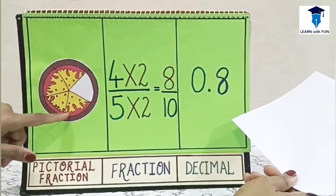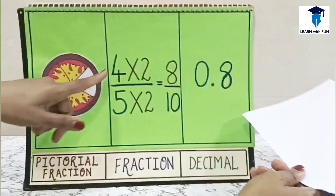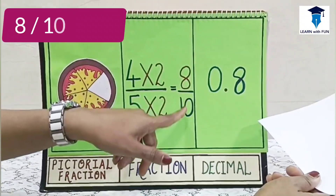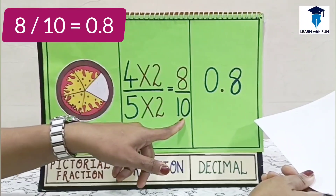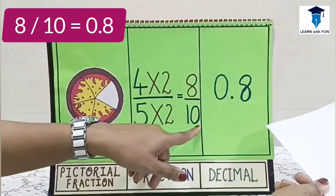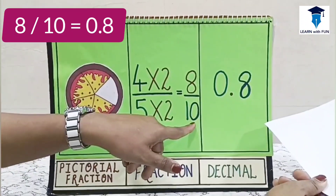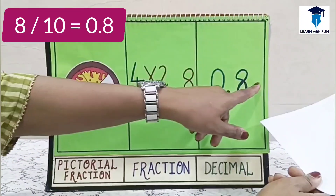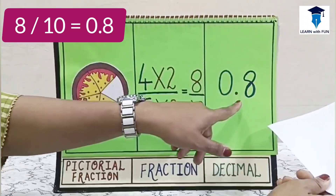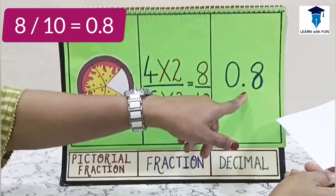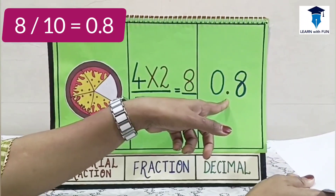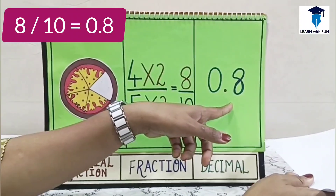Here, 4 pieces are left out of 5, so the fraction is 4 upon 5. Multiplying both by 2 gives 8 upon 10. Since there is only one zero at the denominator's place, the decimal point shifts 1 digit from the right, giving the answer 0.8.